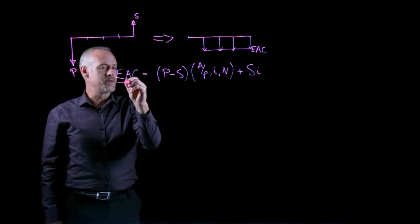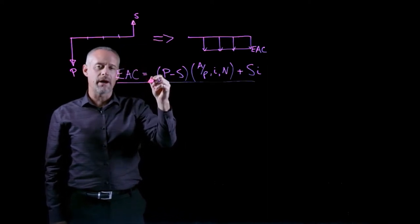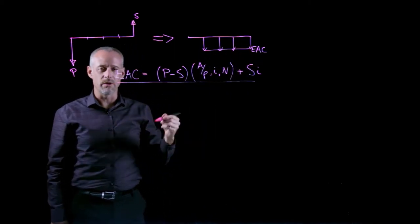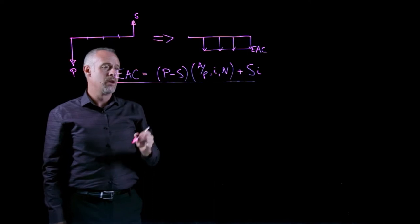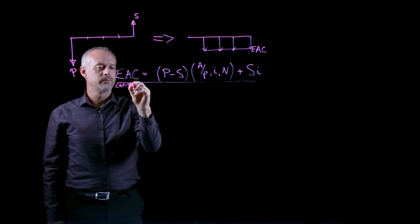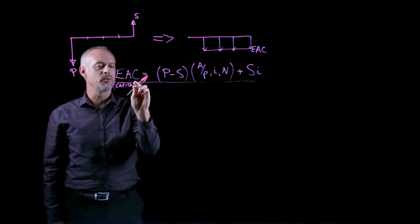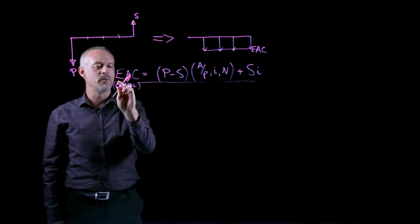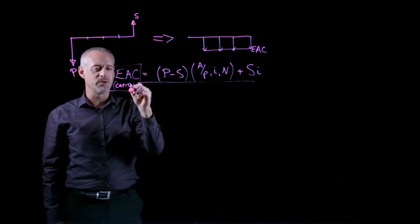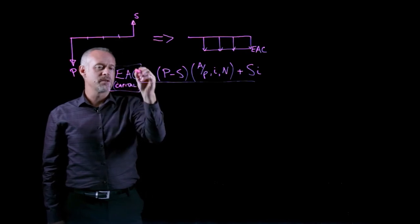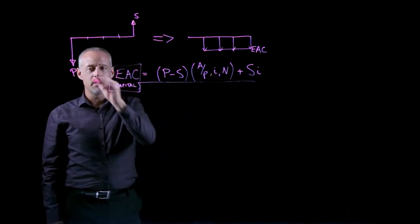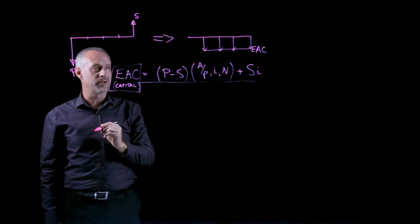But it's important to realize that this formula is simply how we convert a p and an s into an equivalent annual cost, or essentially into an a. We refer to this as the EAC capital. And in finance and engineering economics, when we talk about capital, we're really just talking about some investment amount. So this has salvage value, purchase price, all rolled into one formula, and it allows us to express these investments and returns as an equivalent annual cost.